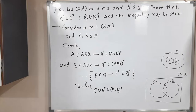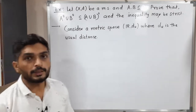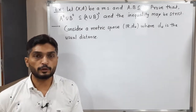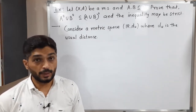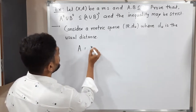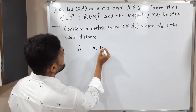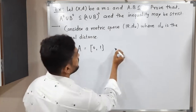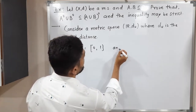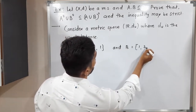In this example, consider the metric space ℝ with the usual distance d(x, y) = |x − y|. Let A = [0, 1] (closed interval) and B = [1, 2] (closed interval).